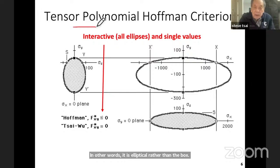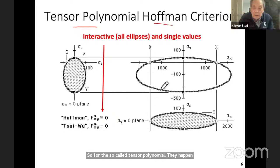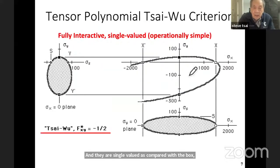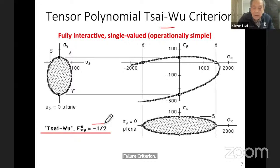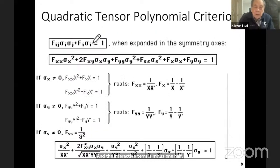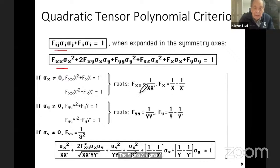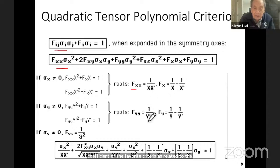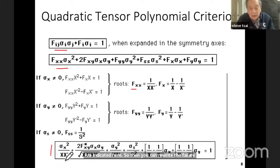For the so-called tensor polynomial — the Hoffman criterion — you can see these are all interactive because they are not boxy; they are elliptical. They are single-valued as compared with the boxy, which are multiple-valued. And this is the Tsai-Wu failure criteria, where the interactive term is minus one-half. When you express the failure criteria as a scalar product, you can expand into sigma x and sigma y space, showing the coefficients related to the five strength parameters.